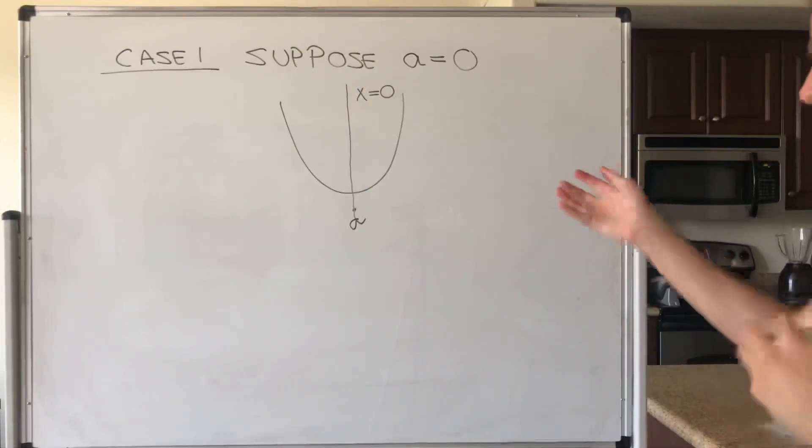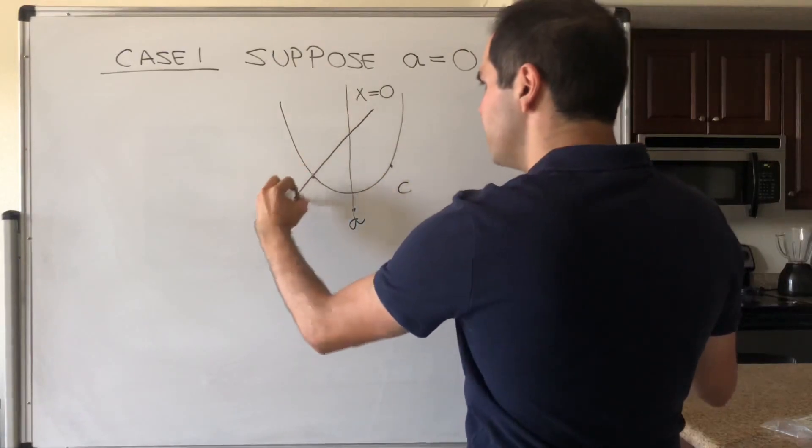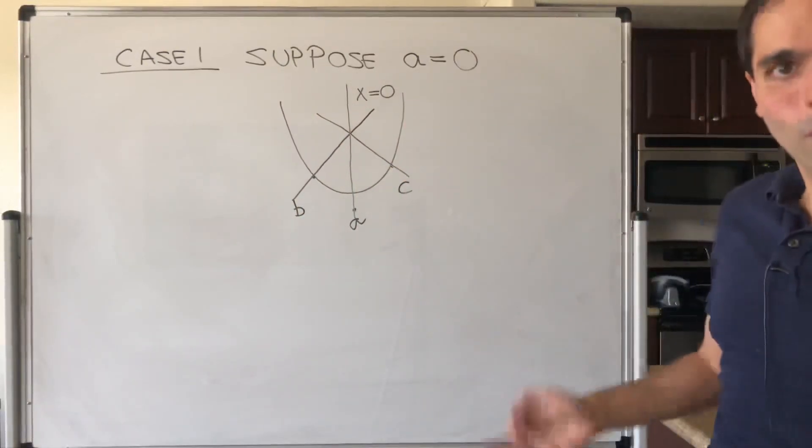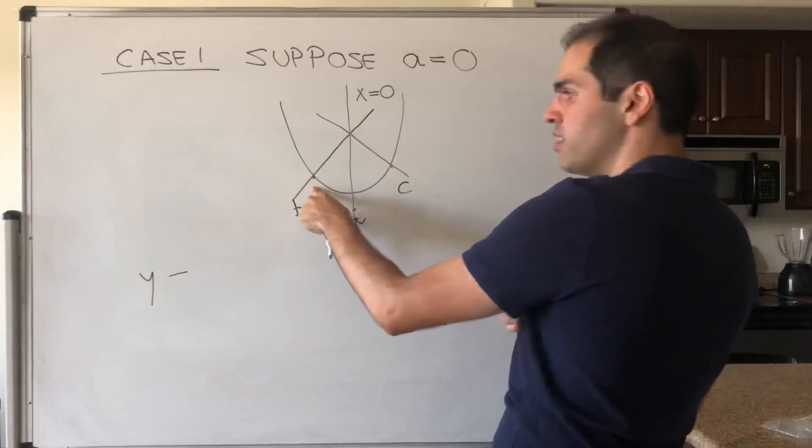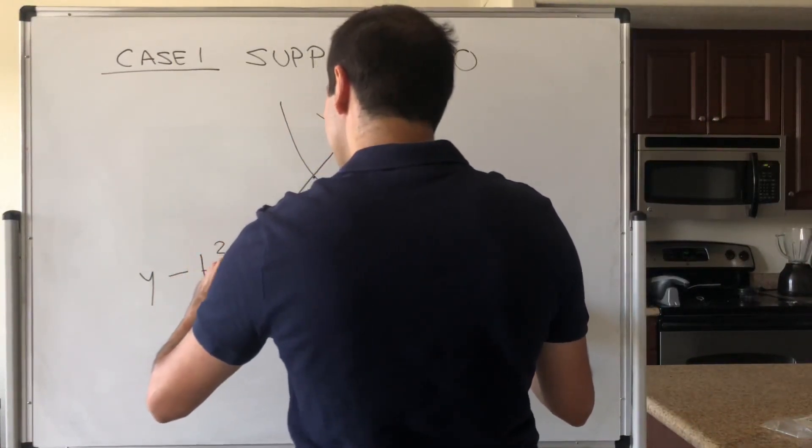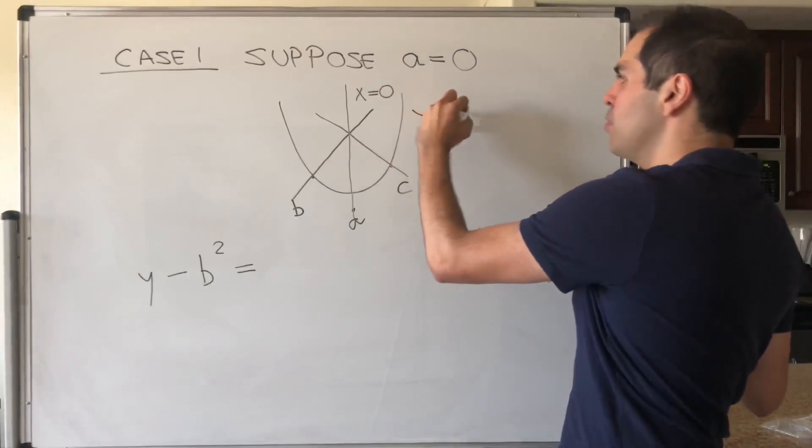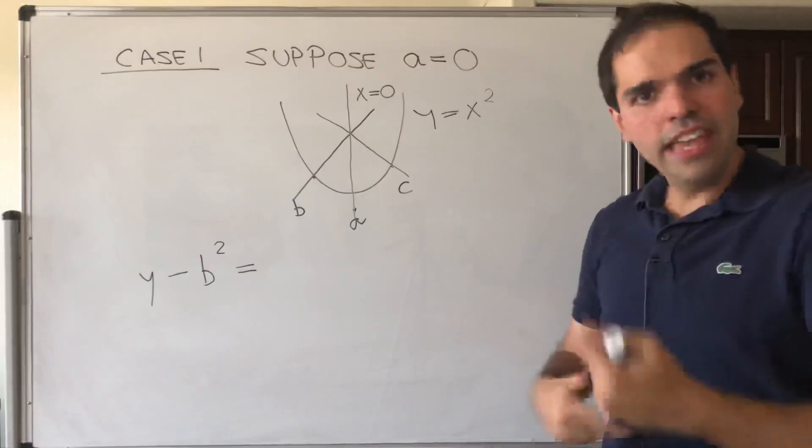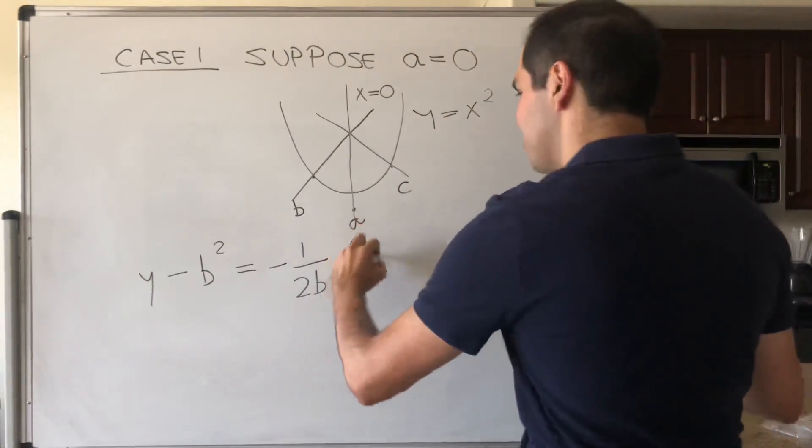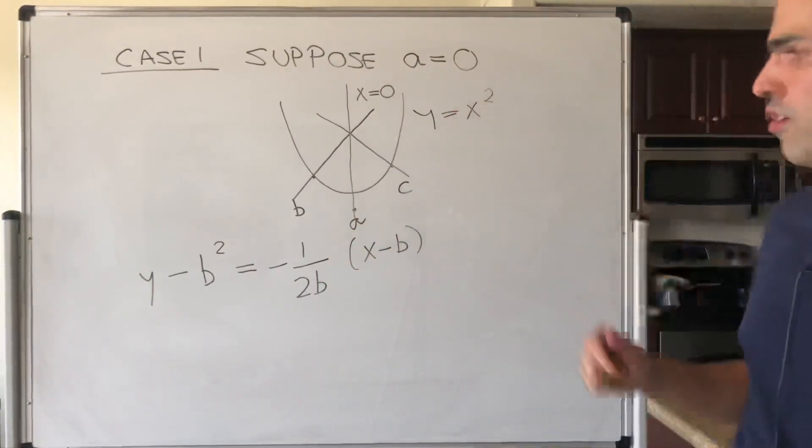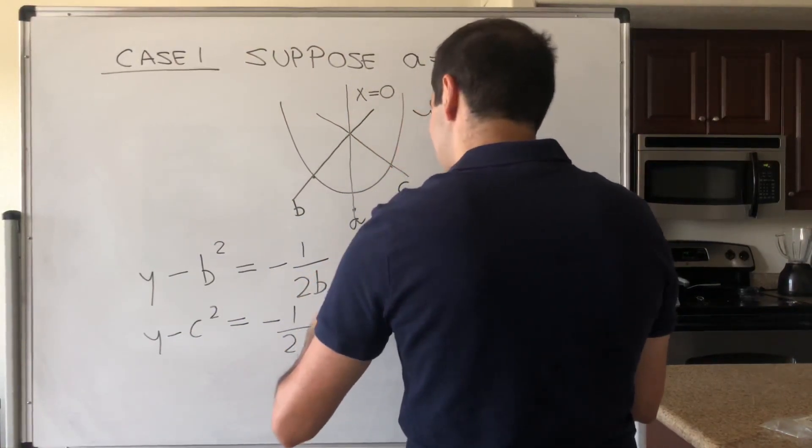So we already know that x equals zero is a normal line, but what about the other ones? So b and c. Well, there's not much we can say about this other than the actual equations. And let me now remind you the equations of the normal lines. Well, one is, because it goes to b, b squared, it is y minus b squared. And then what is the slope? Remember, the negative reciprocal, so since y equals x squared, y prime is 2x, so the negative reciprocal is minus 1 over 2b, times x minus b.